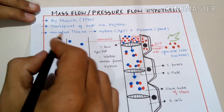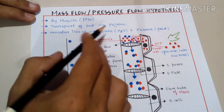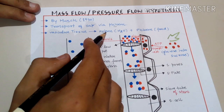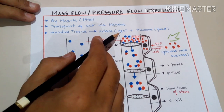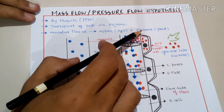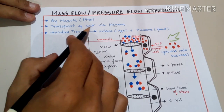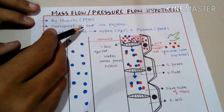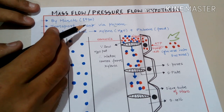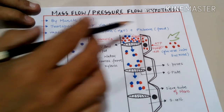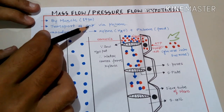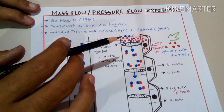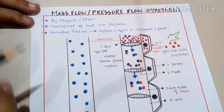We know about the vascular tissues present in the plant body: xylem and phloem. Xylem is responsible for the conduction of water molecules, and phloem is responsible for the conduction of food. Sap is water plus minerals, so it is not proper food but can be called a source of energy, and it is transported via phloem.